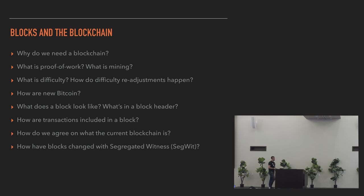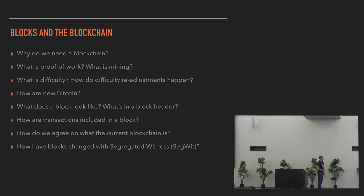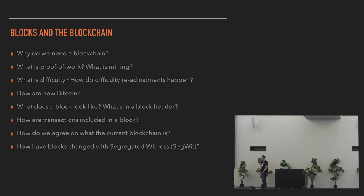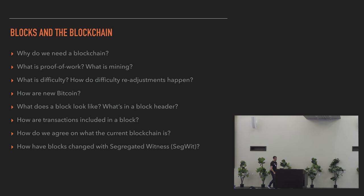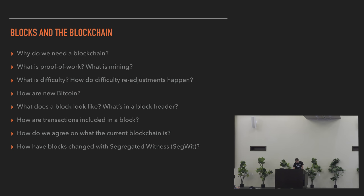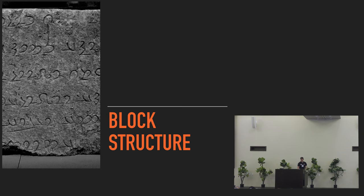We talked about proof of work, difficulty, and mining. For the remainder of the session, I'm going to talk about what a block actually looks like — the thing I've been discussing for the last hour without showing you. I'm going to talk about a block header, the Coinbase transaction, how transactions are included in a block, how we agree on the current state of the blockchain, and then we'll talk about SegWit at the end.